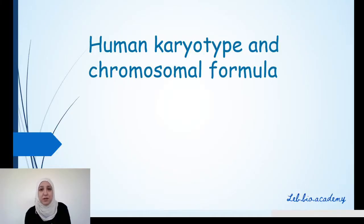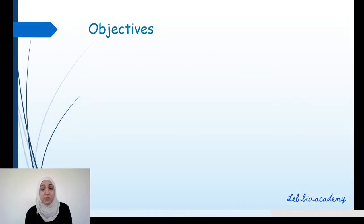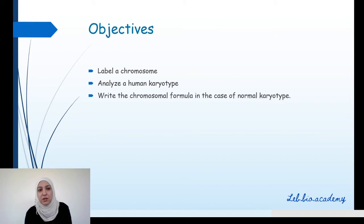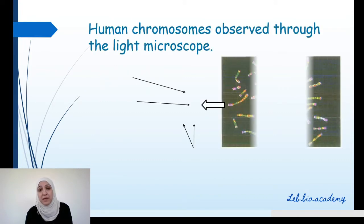So, human karyotype and chromosomal formula — what we're going to talk about today. We will label a chromosome and see the different parts of this tiny chromosome. We will analyze a human karyotype and learn how to write exactly the chromosomal formula in the case of a normal karyotype.